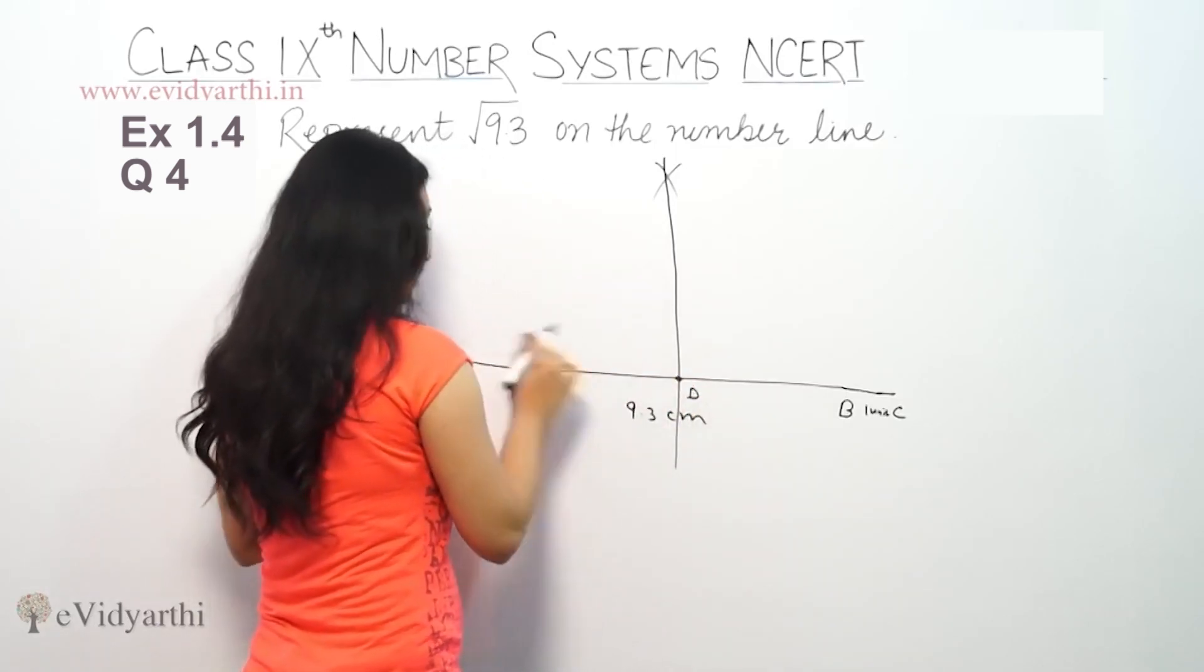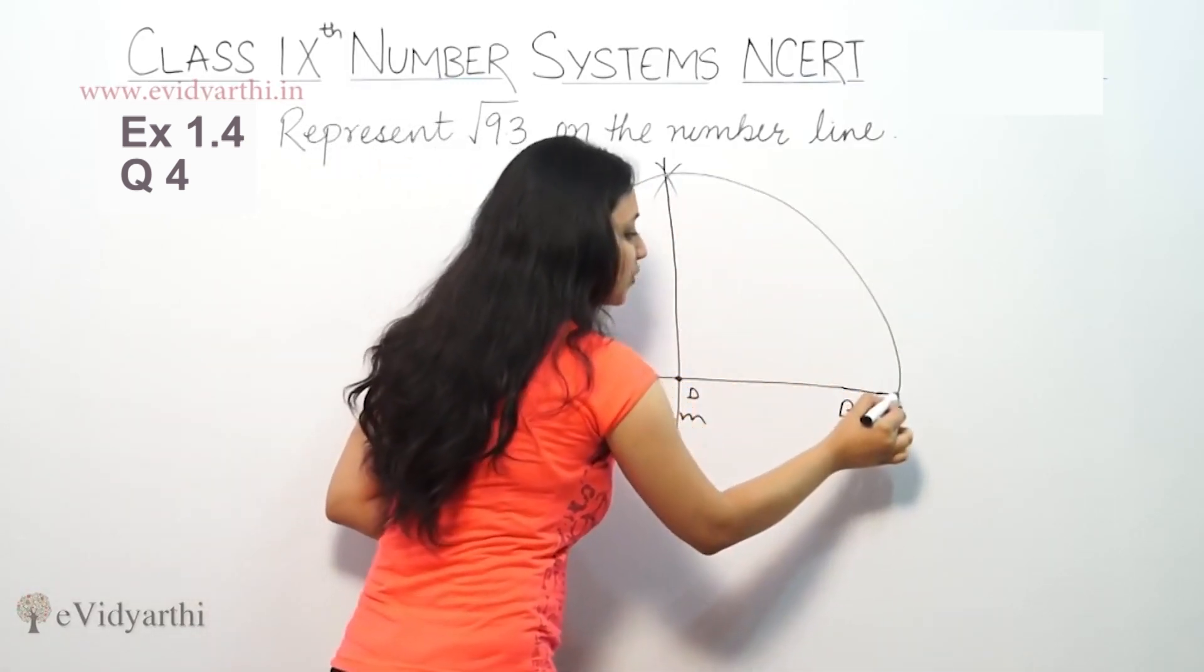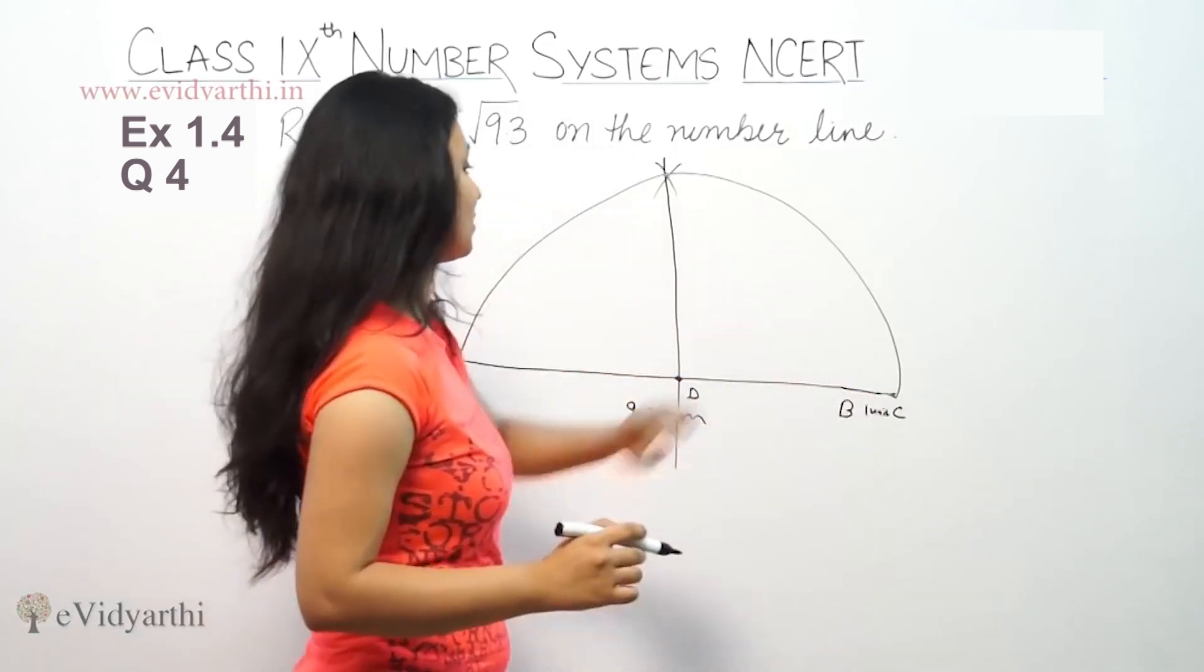Now placing at this point and taking this radius, draw a semi-circle which also reaches C. So this is the semi-circle.